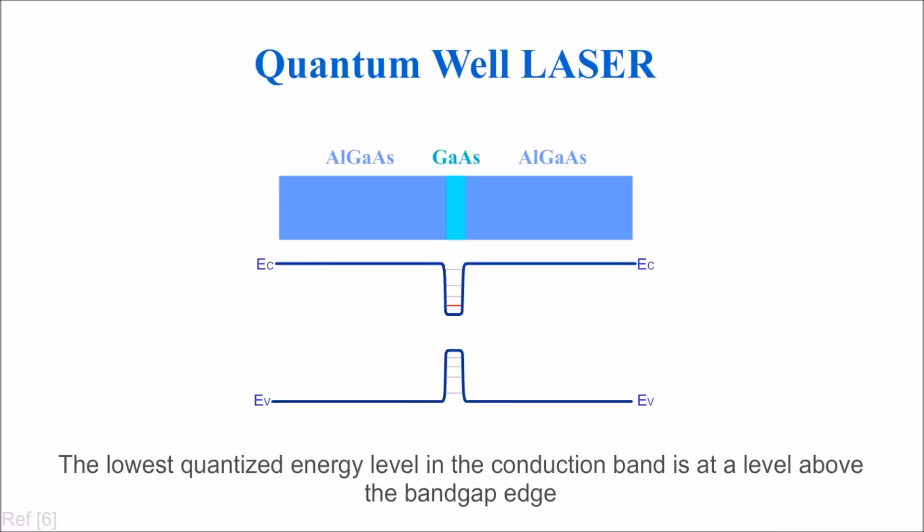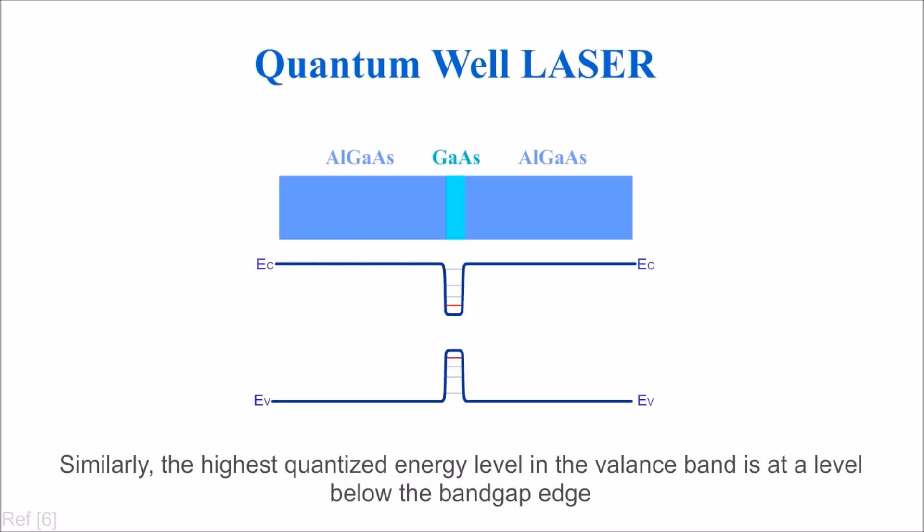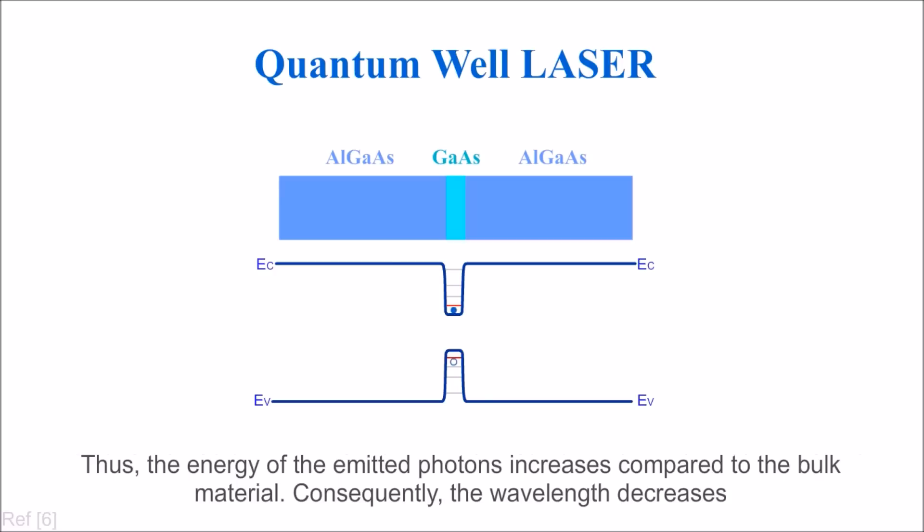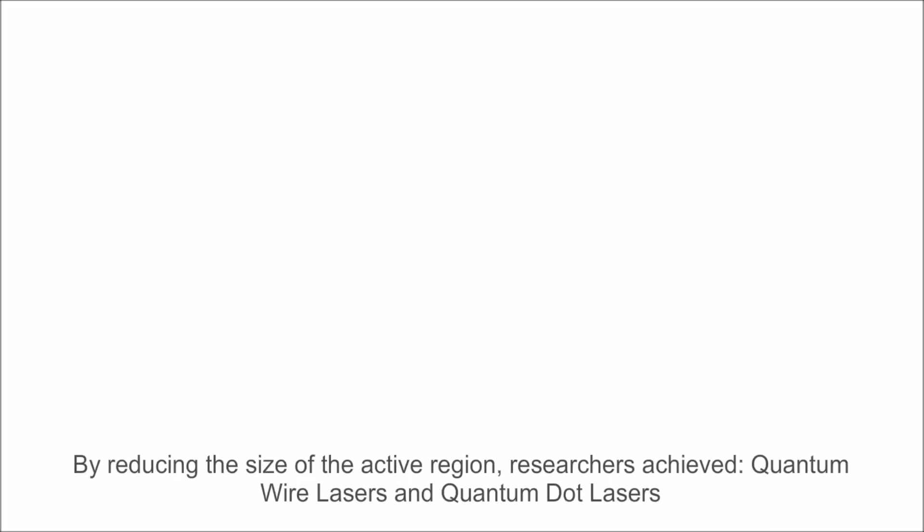The lowest quantized energy level in the conduction band is at a level above the bandgap edge. Similarly, the highest quantized energy level in the valence band is at a level below the bandgap edge. Thus, the energy of emitted photons increases compared to bulk material, consequently the wavelength decreases. By reducing the size of the active region, researchers achieved quantum wire lasers and quantum dot lasers.